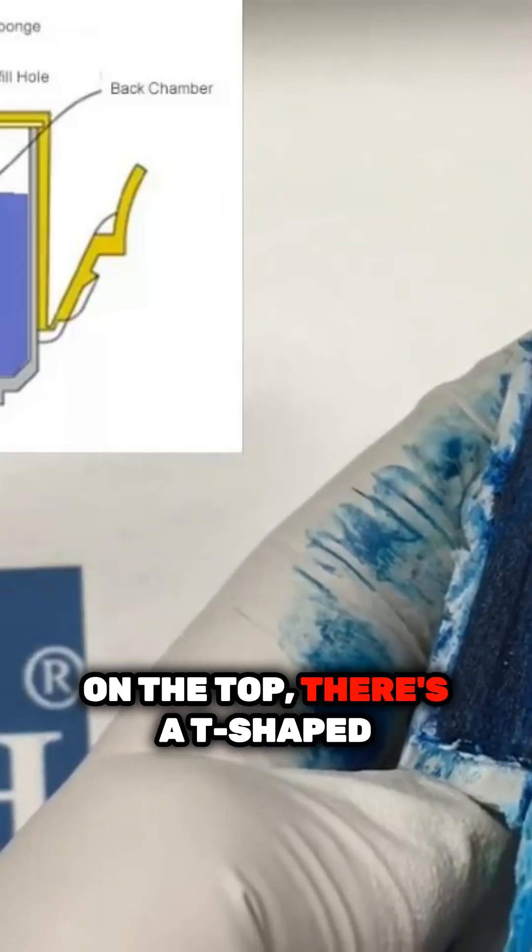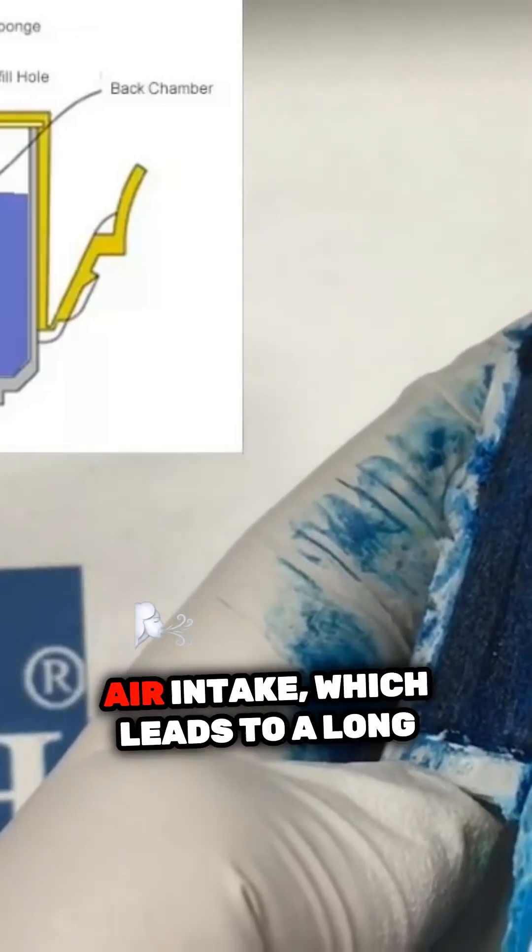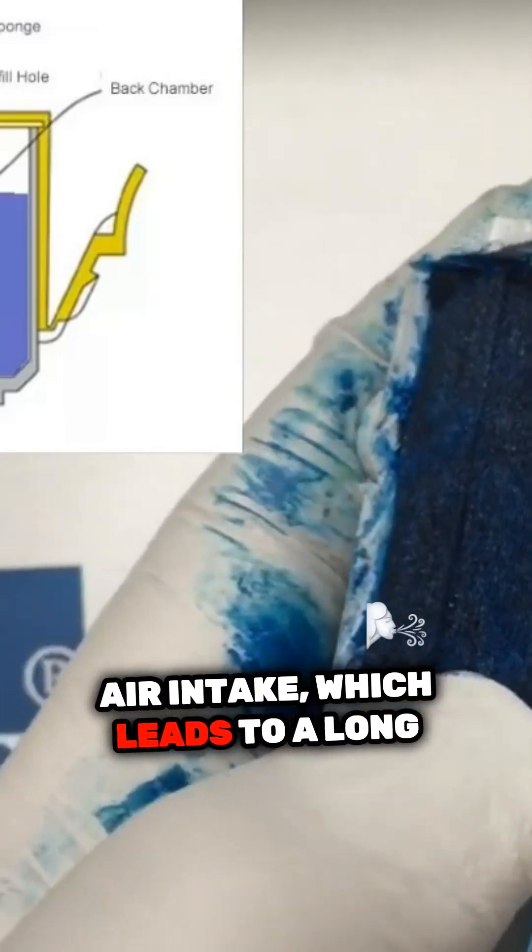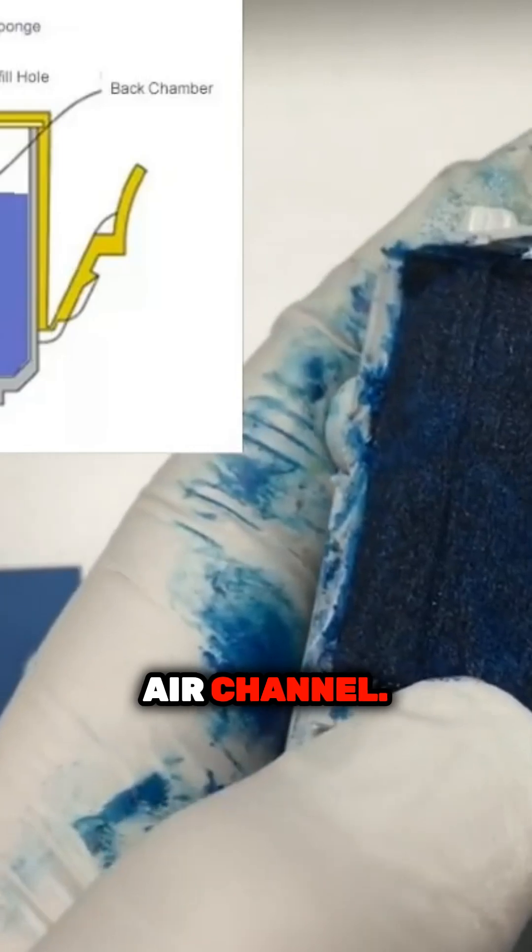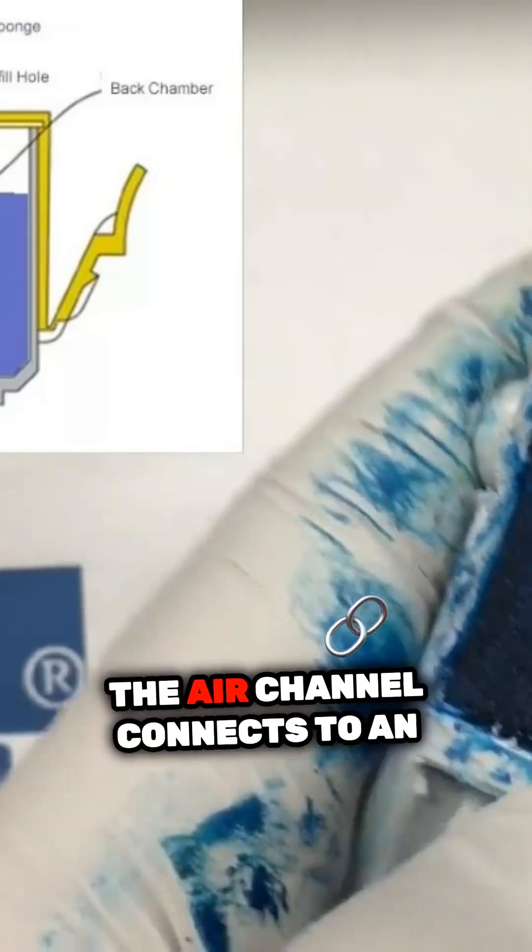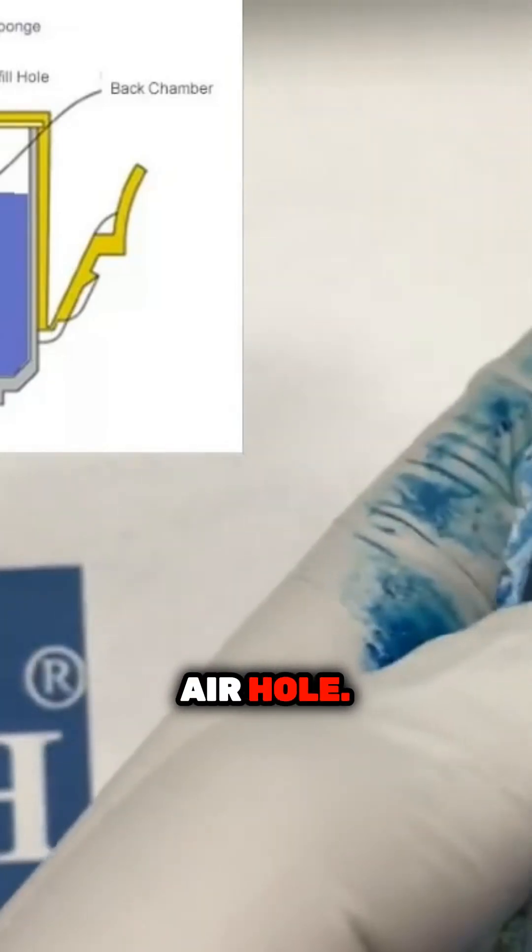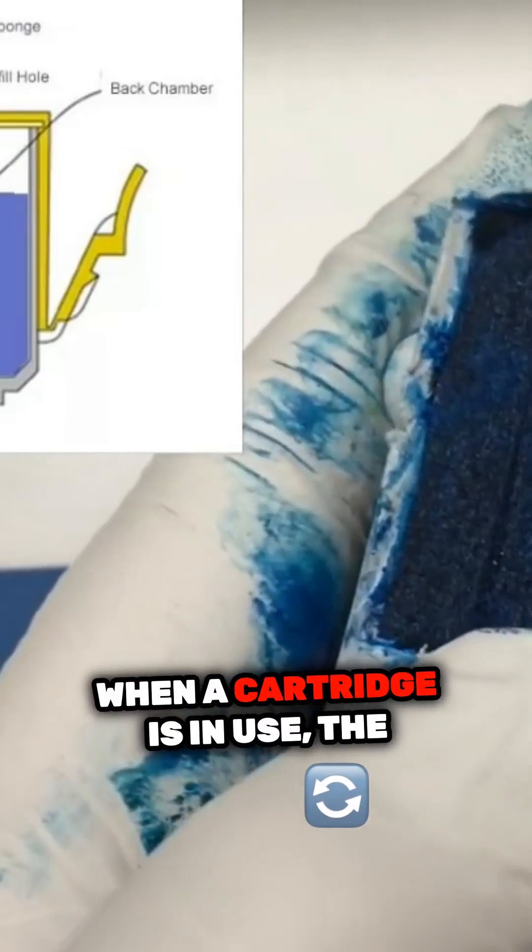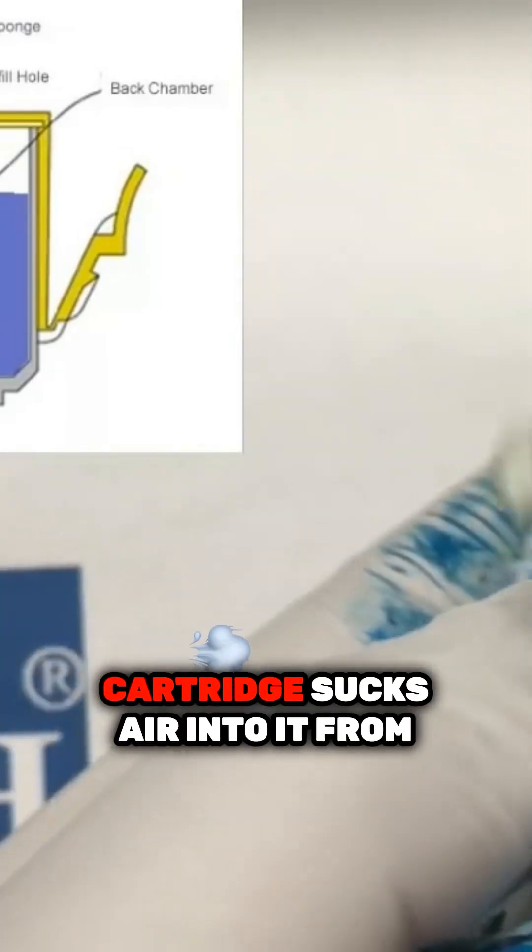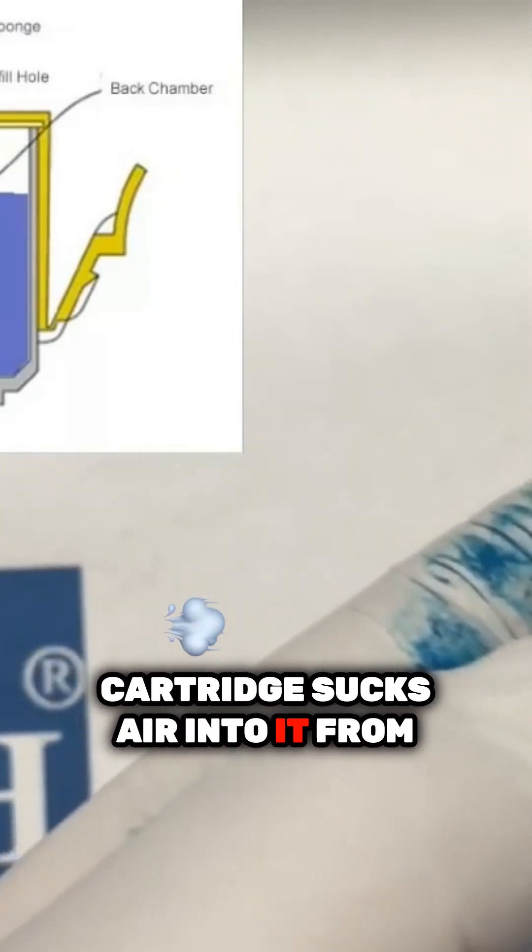On the top, there's a T-shaped air intake which leads to a long air channel. The air channel connects to an air hole. When a cartridge is in use, the cartridge sucks air into it from the air hole.